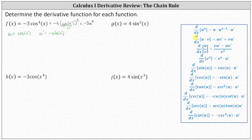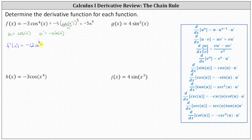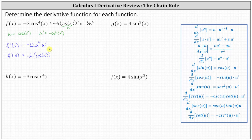Looking at our notes, the derivative of u to the power of n with respect to x is equal to n times u to the power of n minus one times u prime. This indicates that f prime of x is equal to the derivative of negative three u to the fourth with respect to x. We multiply by four, which gives us negative 12, u to the power of three, times u prime. Writing this back in terms of x using u equals cosine x and u prime equals negative sine x, we get f prime of x equals negative 12 cosine cubed x times negative sine x, which simplifies to negative 12 cosine cubed x times sine x.